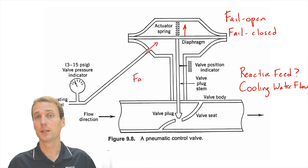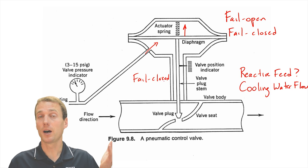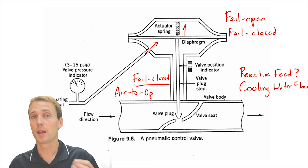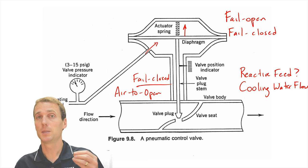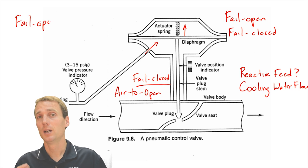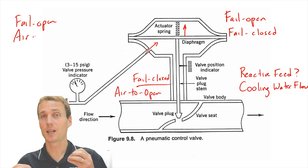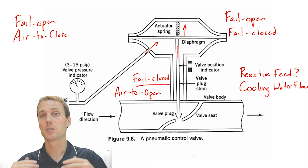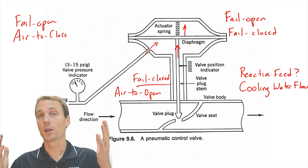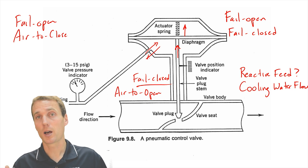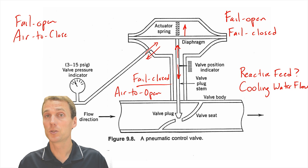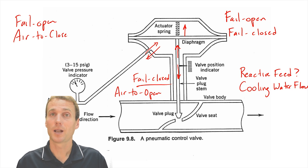If you have a fail-open valve, then it's air to close it. It just depends on where the air is being input into the system. There's often a diaphragm, and as we pressurize one side of that diaphragm, it's going to cause the valve stem to rise. And then as the air pressure is lost, the valve stem is going to close. So this valve, for example, is going to be a fail-closed or air-to-open type valve.